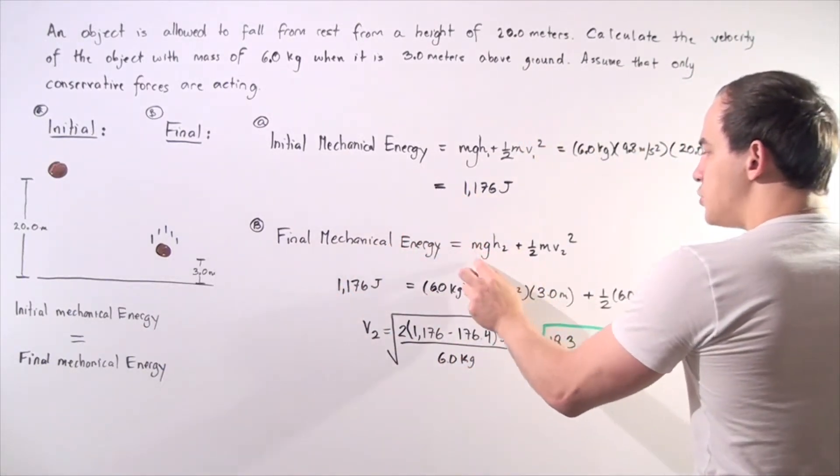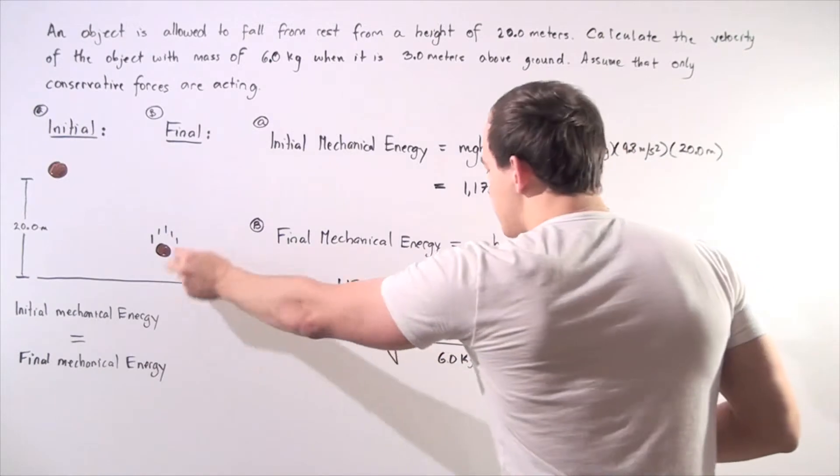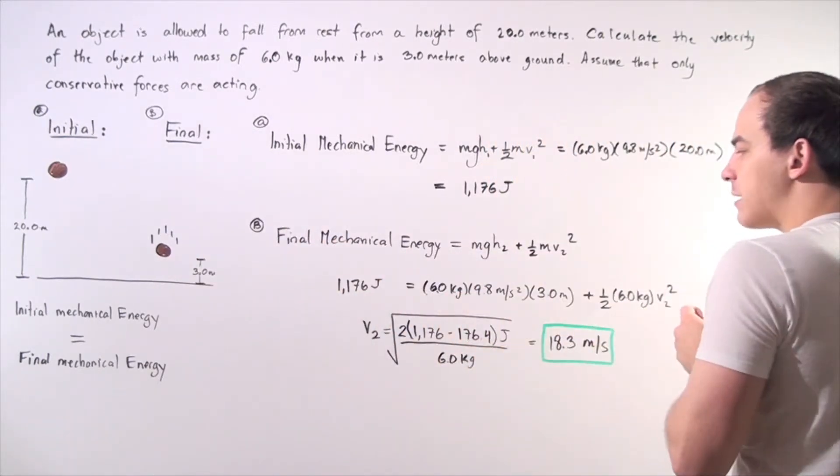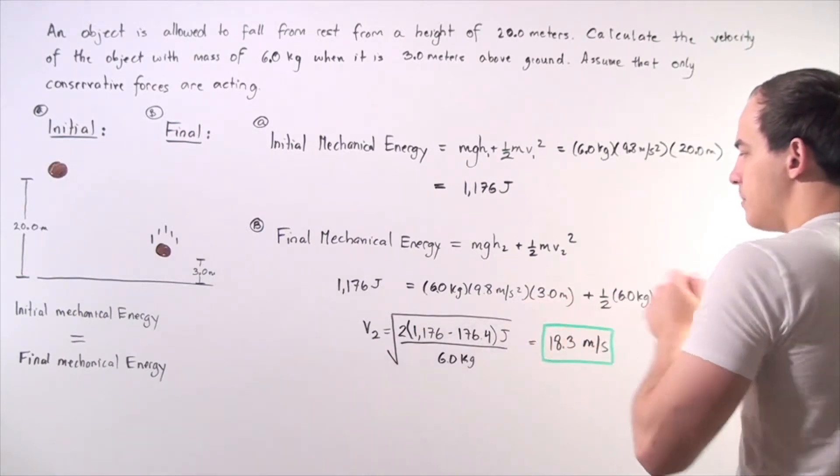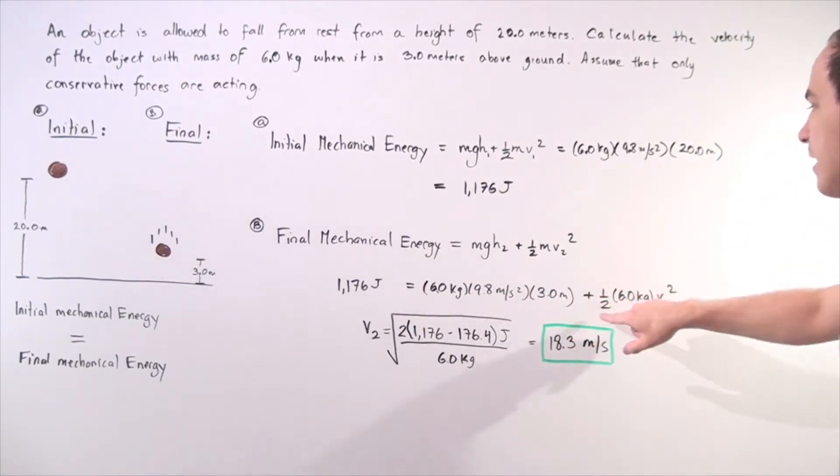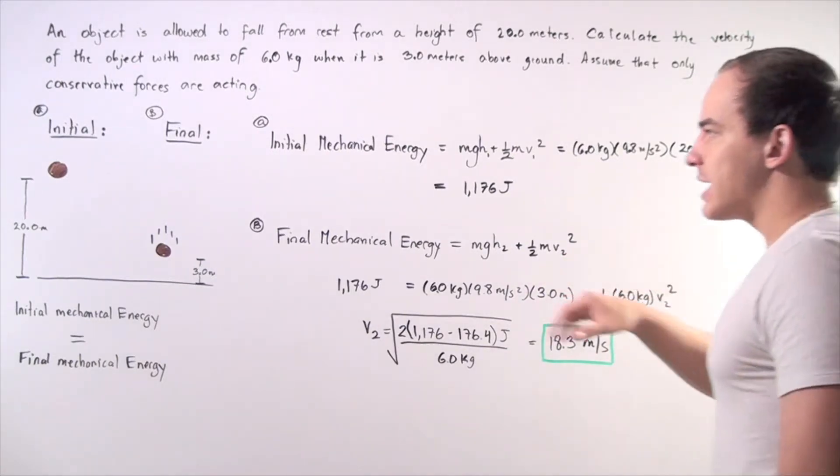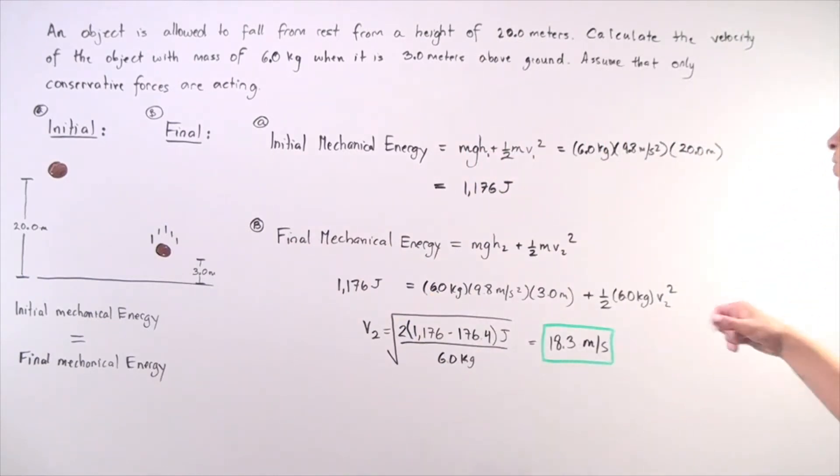Now we know that this final mechanical energy is equivalent to this value, so we plug that in here. We plug our values for mgh2 where h2 is 3 meters. So we have 6 kilograms times 9.8 meters per second squared multiplied by 3 meters plus 1 half, we know what m is, 6 kilograms, but we don't know what our v2 is, our final velocity at our final position. So that's our unknown.